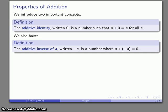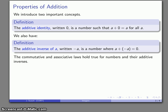The other idea tied into additive identity is the notion of an additive inverse, written as the additive inverse of a. We traditionally read this as 'negative a,' although be careful — later I'll talk about negative numbers and they're not the same thing. In general, the additive inverse of a is a number where if I add it to a, what I get is zero. Both the commutative and associative laws hold for numbers and their additive inverses — we can prove this but won't at this time.